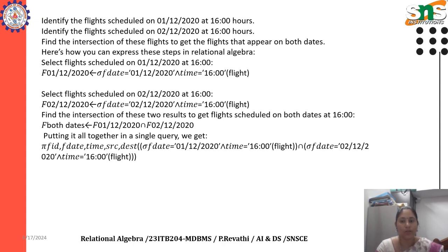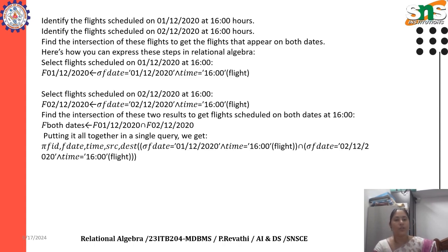Identify the flights scheduled on 1-12-2020 at 16 hours and on 2-12-2020 at 16 hours. Select flights on first date: F_1-12-2020 := selection ( date = 1-12-2020 AND time = 16 ) of flight. Select flights on second date: F_2-12-2020 := selection ( date = 2-12-2020 AND time = 16 ) of flight.